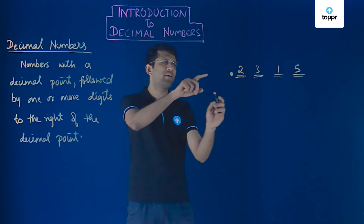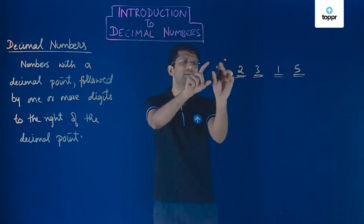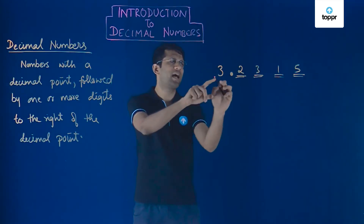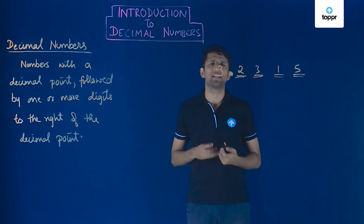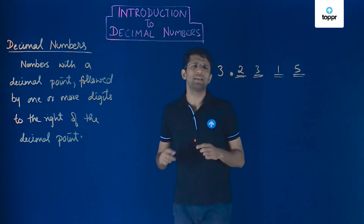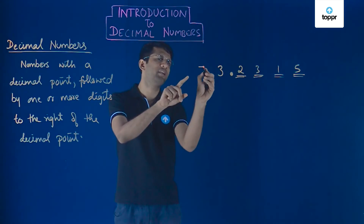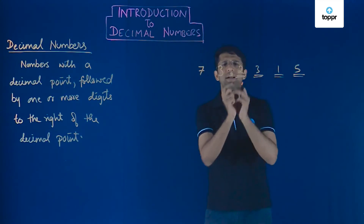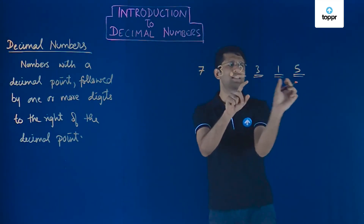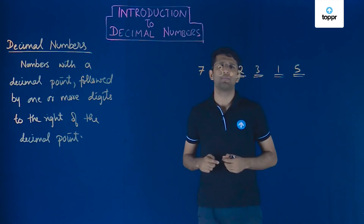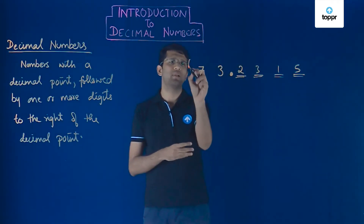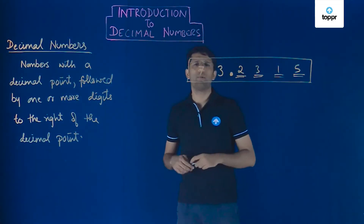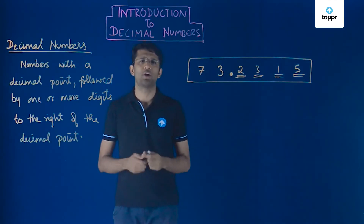By convention, we never start a number with a decimal point — we always write some digit to the left. So if the digit on the left is 3, we get 3.2315, which is a decimal number. Similarly, we can add one more digit to the left, say 7, and get 73.2315 — again a decimal number, because it still has a decimal point followed by at least one digit to the right. These are examples of decimal numbers.